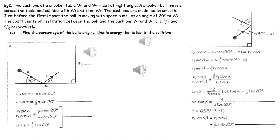In the second collision, we've got the object coming towards the vertical wall with a velocity V1, which we worked out in the first part, and it's coming at an angle of 90 minus alpha. It's coming away from that vertical wall with a velocity V2 at an angle beta. We can work out the velocity parallel and perpendicular to the vertical wall before impact, then apply conservation of linear momentum and Newton's experimental law to work out an expression for V2 in terms of U.